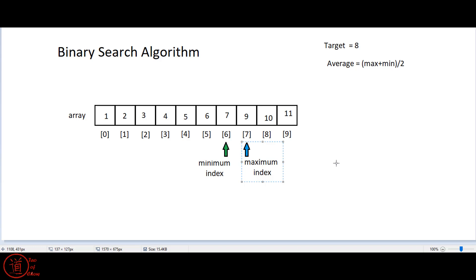That's essentially it. You set up your min and max, check whether the target is possibly within the boundary, and loop as long as the minimum and maximum are not adjacent or the same and the number has not been found. Inside the while loop: if array[average] equals the target, mark it as found; if not, either move the minimum or move the maximum to the average, depending on which side the target is going to be on.